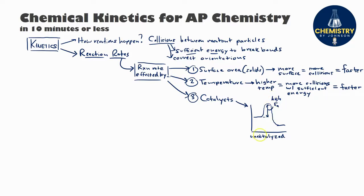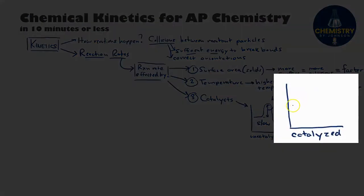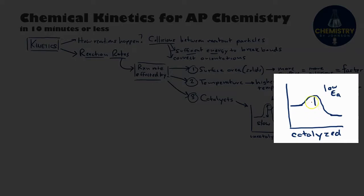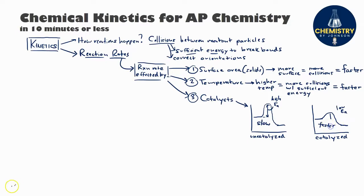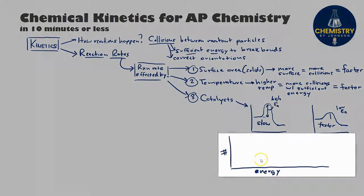If particles don't have sufficient energy, they'll collide and just bounce off each other unchanged — the reaction will not occur. For this reason, when the activation energy is higher, the reaction occurs more slowly. If a catalyst is present, the energy profile diagram changes: the reactants and products remain unchanged, but the catalyst offers an alternate pathway that requires less activation energy. Since Eₐ is lower, more molecules have enough energy to react, resulting in a faster reaction rate.